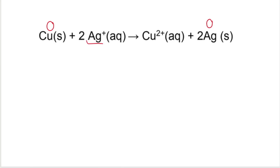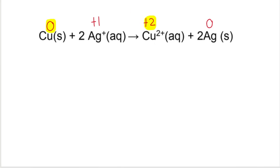Then we've got Ag⁺ with a charge of plus one. So if you have an ion like this, the oxidation number is equal to the charge on that ion — so plus one. And over here we've got Cu²⁺, so the oxidation number is plus two. Then if we compare copper on the left-hand side of the arrow, oxidation number of zero, to copper on the right-hand side, oxidation number plus two — what happened to that oxidation number? It increased. And an increase in oxidation number means that oxidation has taken place.